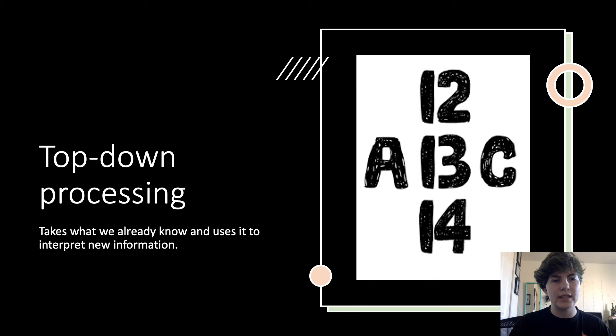So top-down processing takes what we already know and uses it to interpret new information. If we look at the example here, there is 12, 13, 14, and A, B, C. Because we are aware of the symbols around the middle symbol, we're able to see that if we read across, it's going to be A, B, C. But then when we read top to bottom, it's 12, 13, 14. And so we're using that outside information to make an inference about the new information.